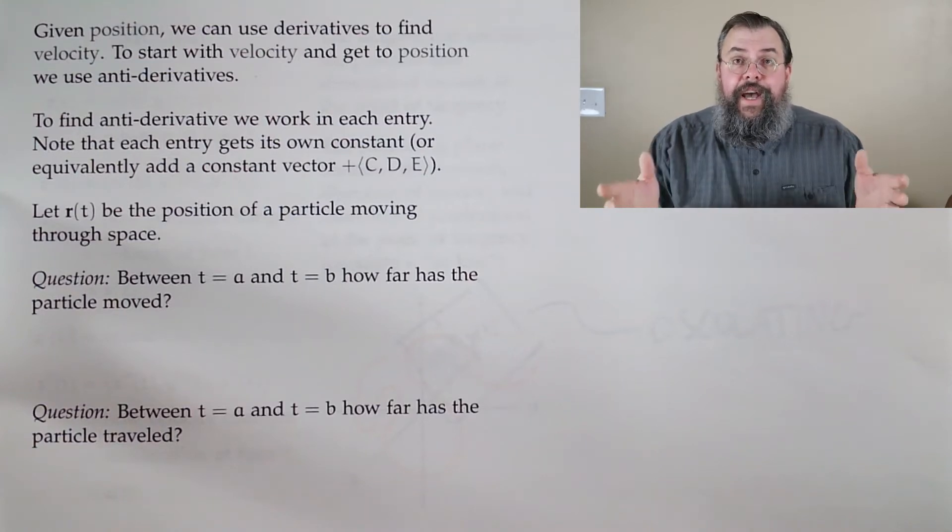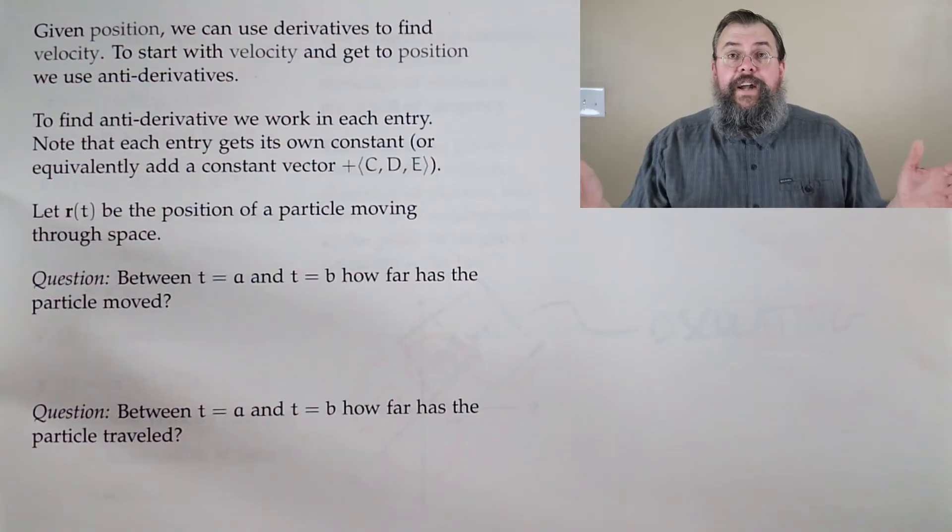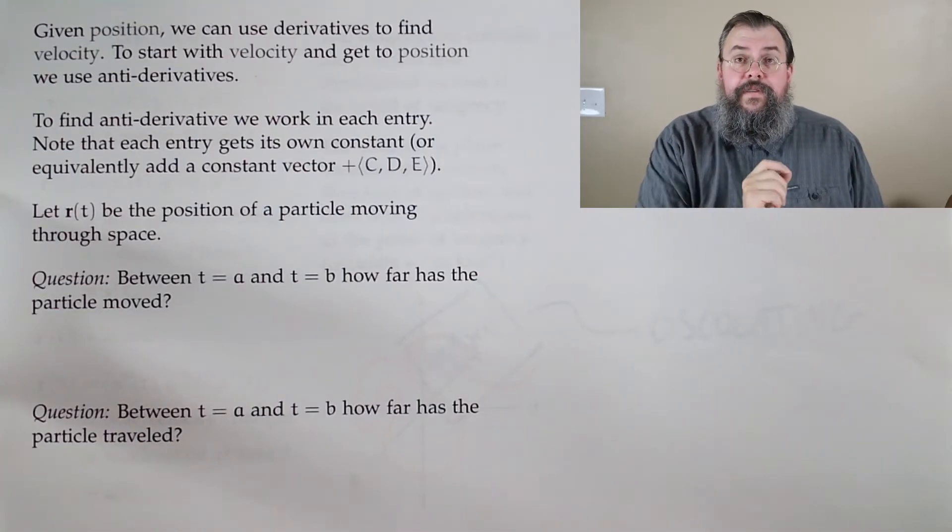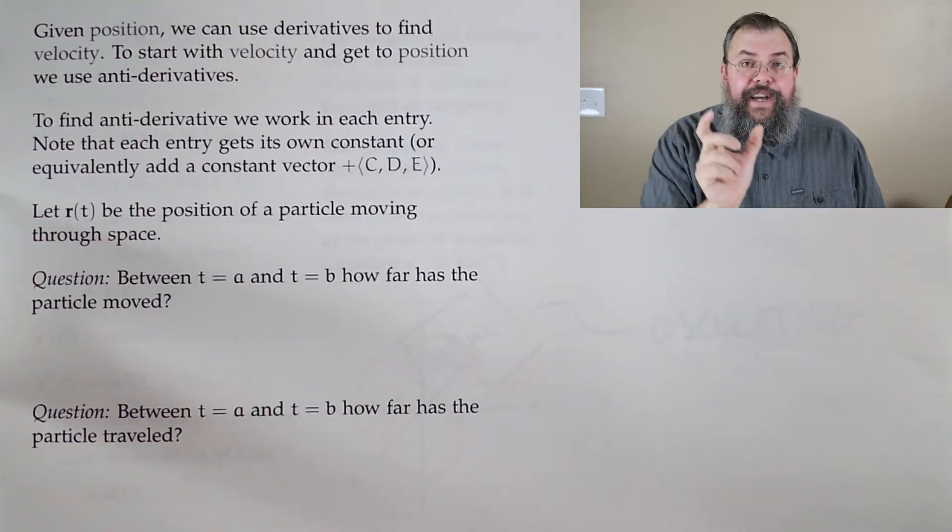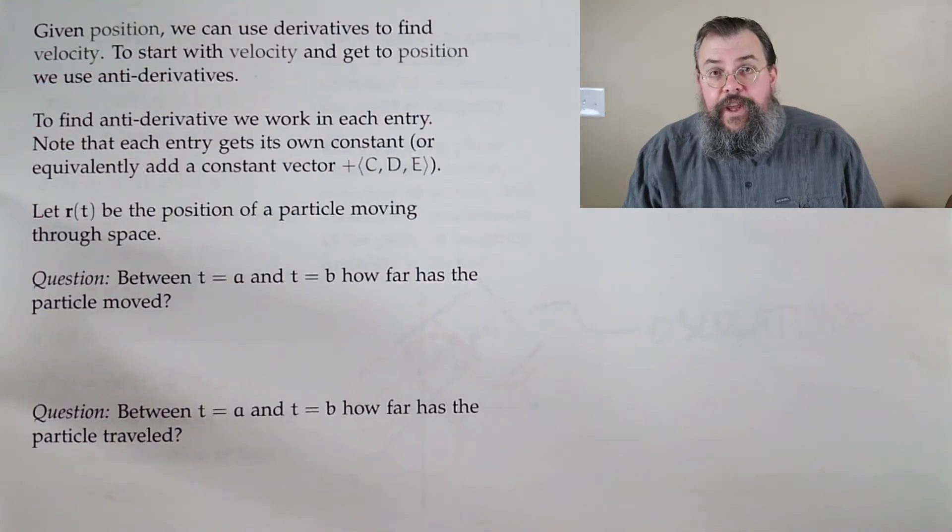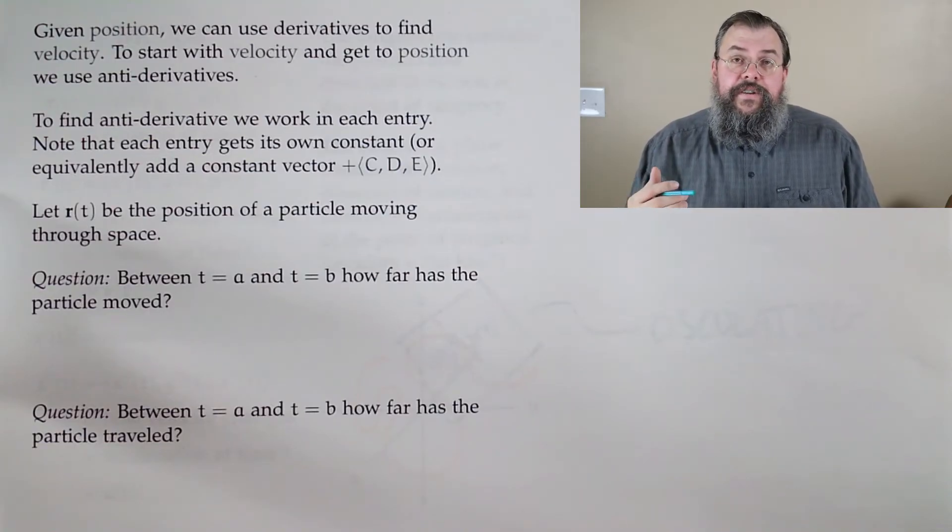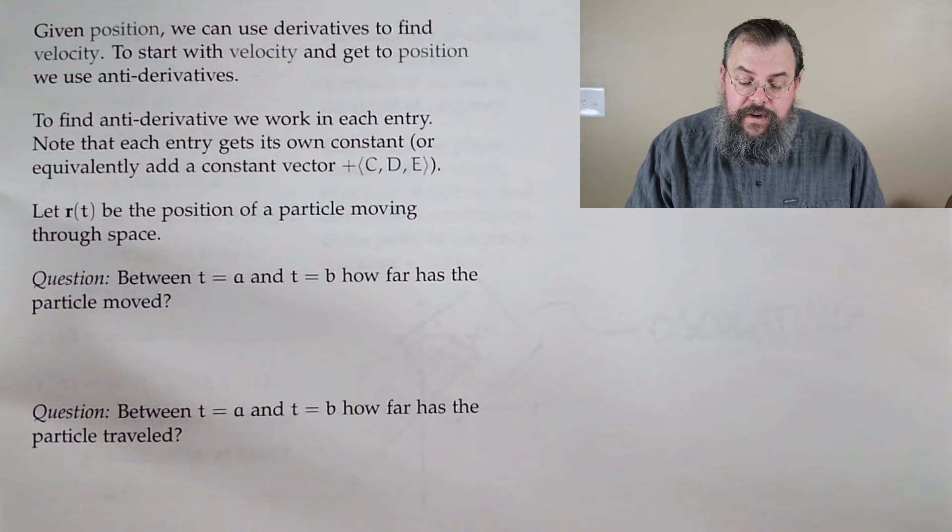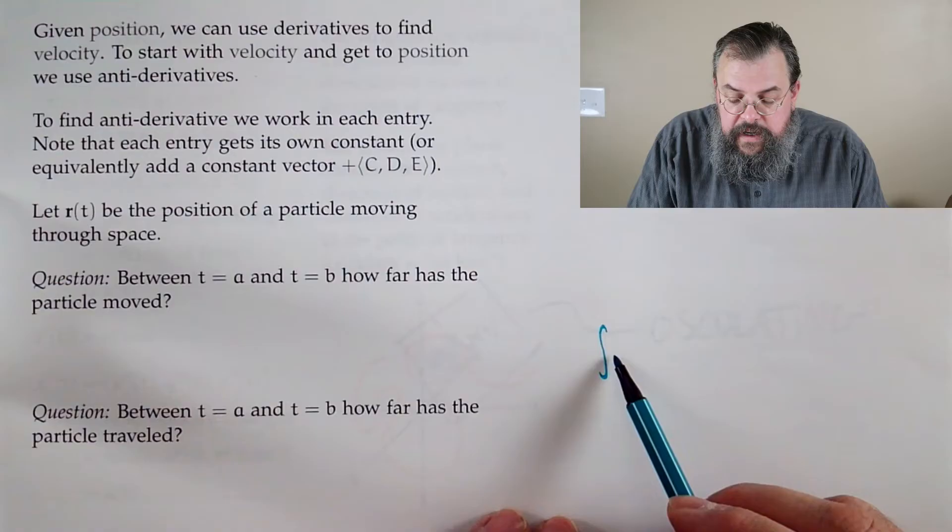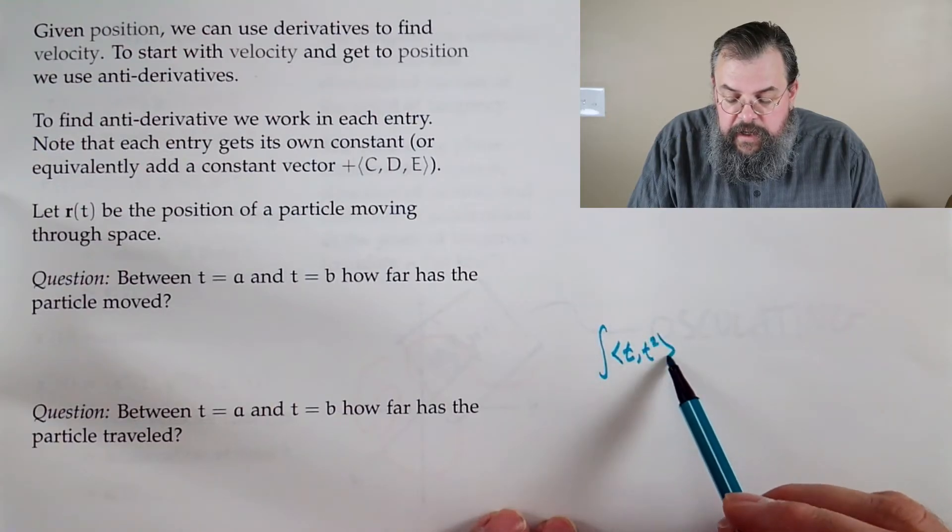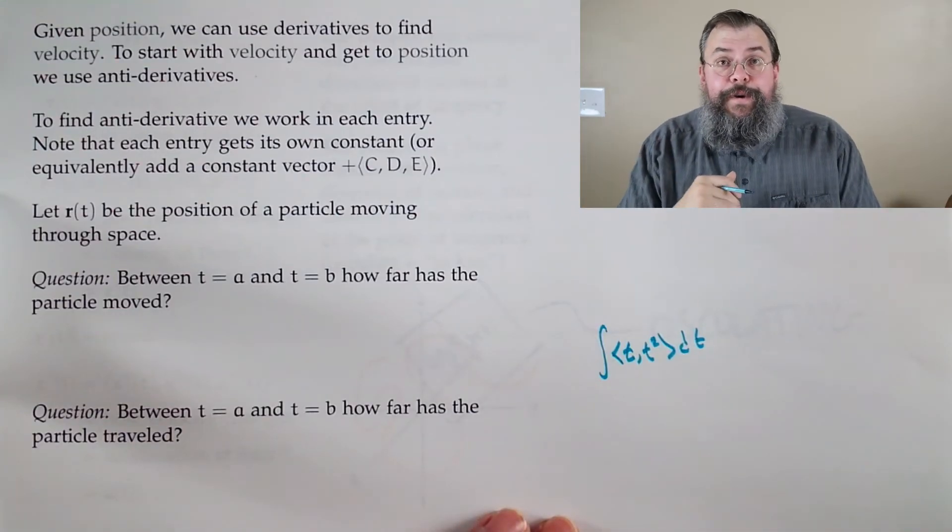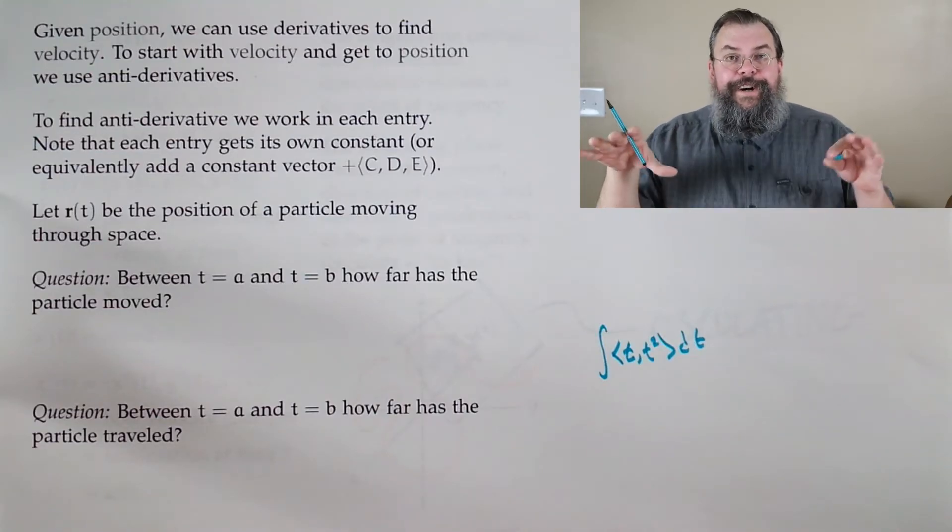Now, how do we do anti-derivatives for vector-valued functions? Well, think back to how we did derivatives. The way we do derivatives is entry by entry, one entry at a time. So the way we take anti-derivatives is entry by entry, one entry at a time. Now there is one small caveat, a thing to be aware of. When you take an anti-derivative, there's always a constant involved. So where does the constant show up? Most of our time we'll be spending it in three dimensions. After all, that's the one we're really comfortable with.